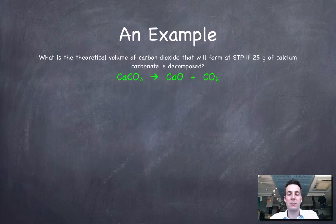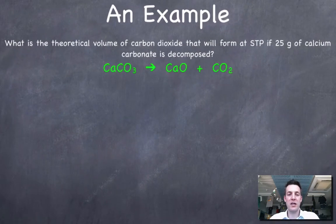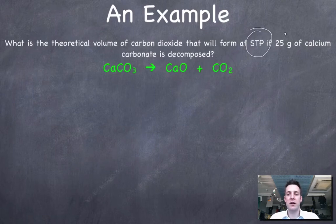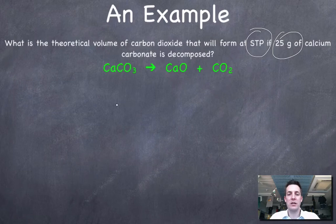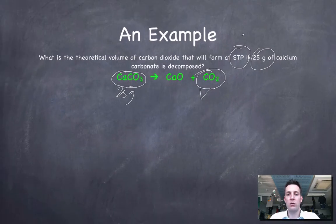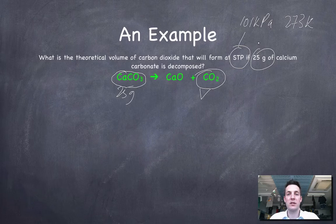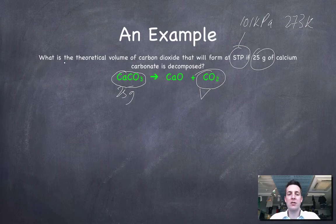Let's start off with an example that doesn't involve Avogadro's law. We're being asked here, what is the theoretical volume of carbon dioxide that will form at STP if 25 grams of calcium carbonate is decomposed? Here's our calcium carbonate, we've got 25 grams of that. We're being asked about the volume of carbon dioxide. We're being told that we're at STP, so that's 101 kilopascals and 273 kelvin, which is the same as 0 degrees centigrade, but we're not going to need degrees centigrade in these calculations.